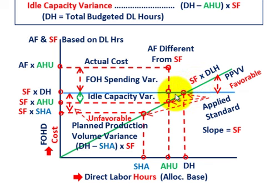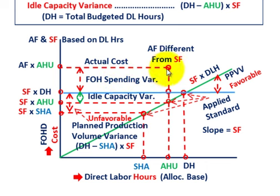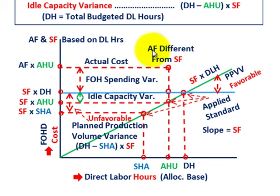The difference between our standard fixed overhead cost — that constant amount on the blue line — and our actual cost at that point is our fixed overhead spending variance. You can understand why it's a spending variance: you're looking at a constant amount for actual hours used, where the actual fixed overhead rate differs from the standard fixed rate. That's the spending variance.